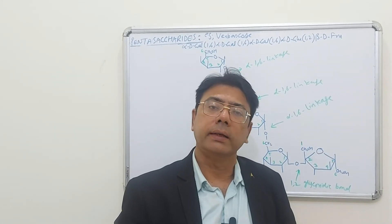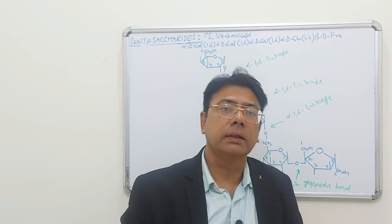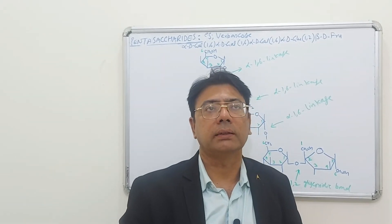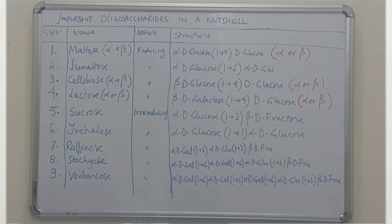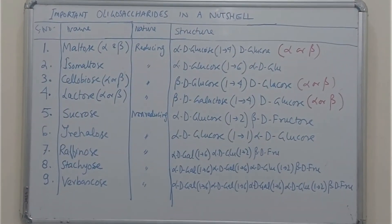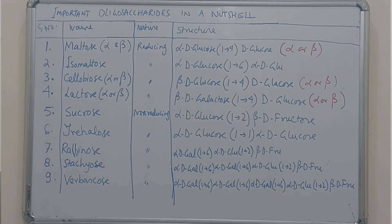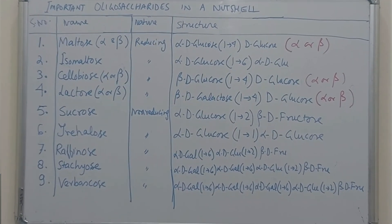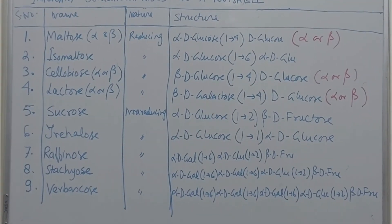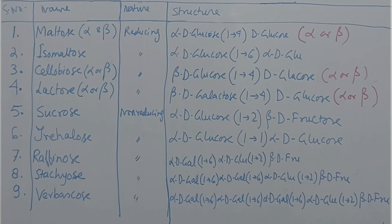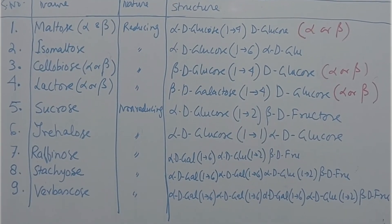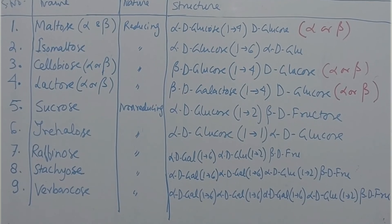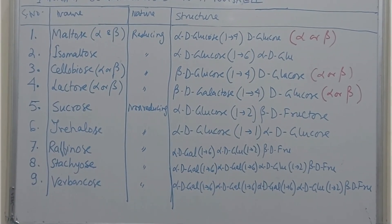So up to glucose and fructose it was sucrose; adding one galactose gave raffinose; adding one more gave stachyose; and adding one more galactose gives verbascose. These three molecules — raffinose, stachyose, and verbascose — are formed as products of digestion of legumes. That ends the discussion on oligosaccharides today. Please keep watching my videos; in the next lecture I will be discussing polysaccharides.